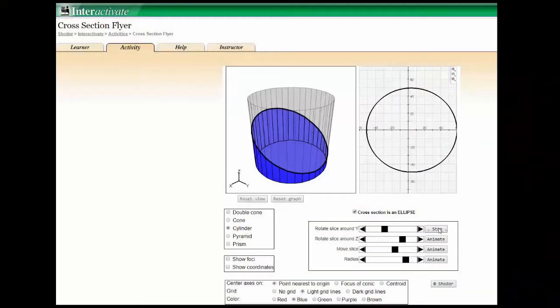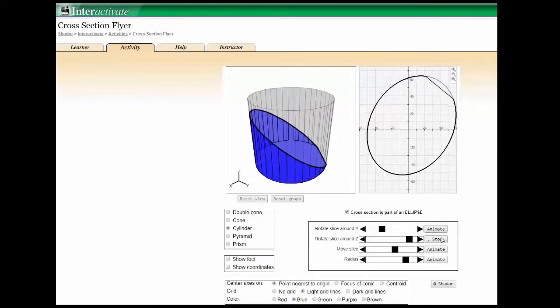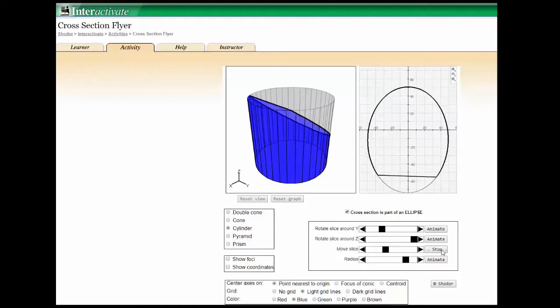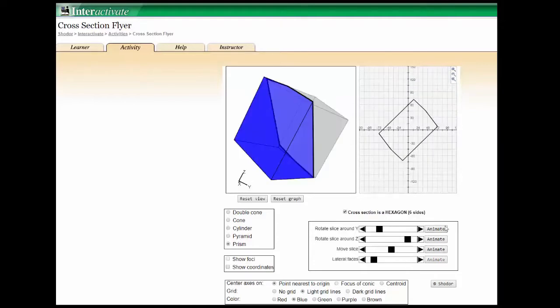In addition, online applets like Cross-Section Flyer from Shodor Interactivate support students' development of spatial mathematics in order to identify cross-sections and dimensions needed to solve non-routine or composite volume problems.